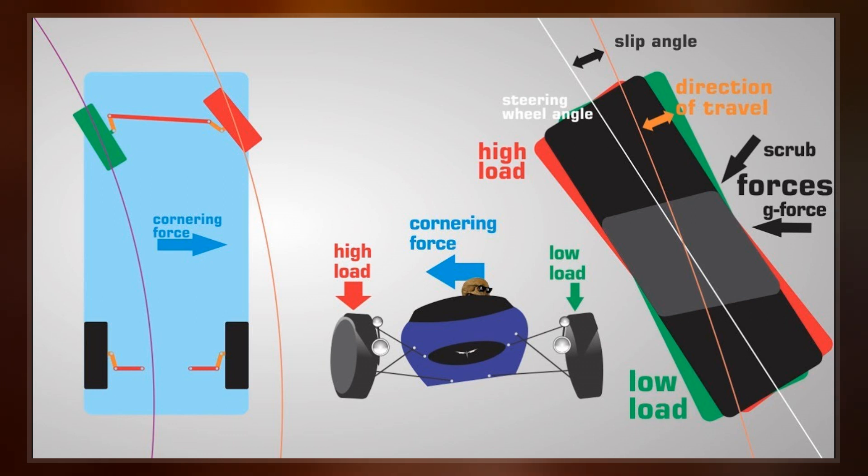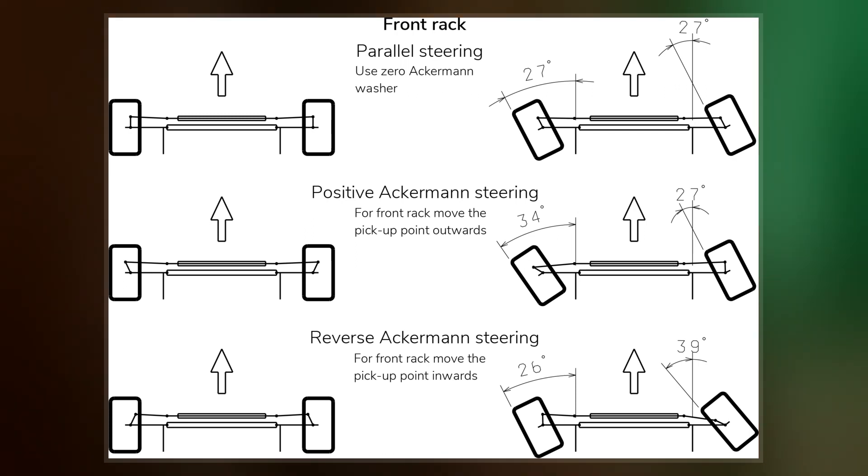Intersecting the axes of the front wheels on this line as well requires that the inside front wheel be turned when steering through a greater angle than the outside wheel.